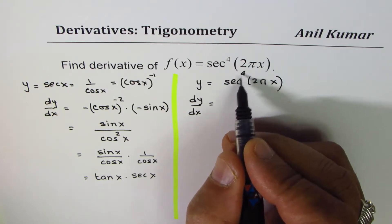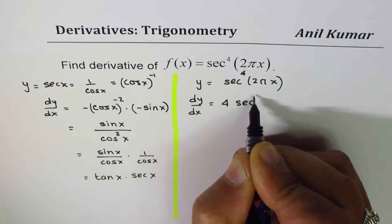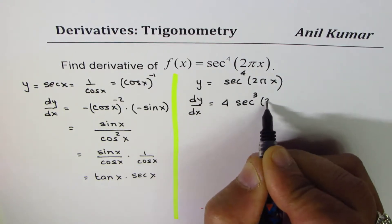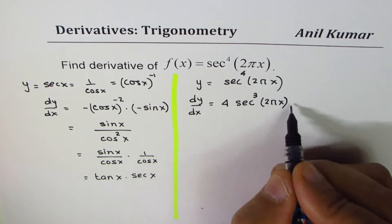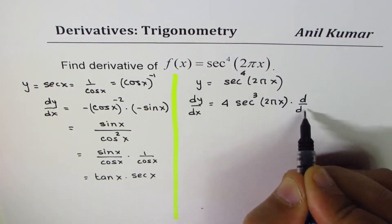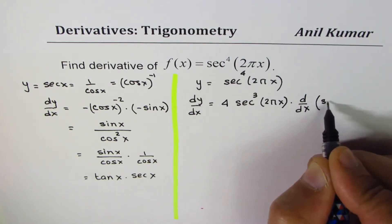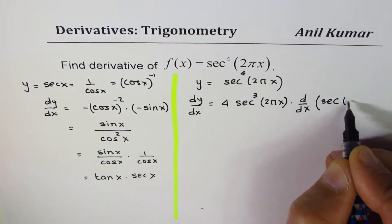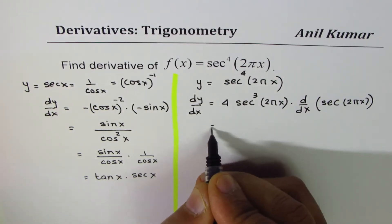Power rule means 4 times secant cube 2 pi x, times the derivative d/dx of the inside function, which is secant 2 pi x.